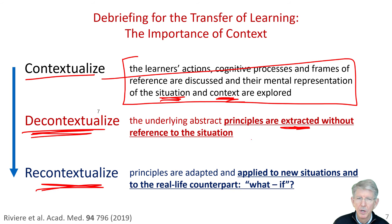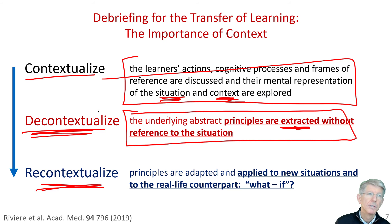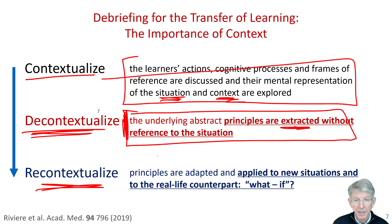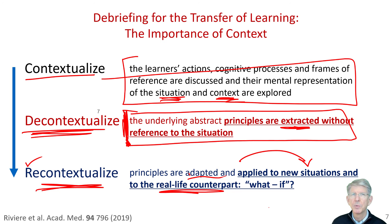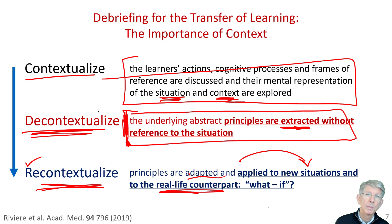The critical part is when the principles are extracted without reference to the situation. This is when you take what you've learned and strip away the surface structure — the situation, the contextual details — and go for the underlying, or what's called deep structure. Then, importantly, you have to recontextualize it. Take this deep structure and adapt it, applying it to new situations with real-life counterparts — what if this situation, what if that context — so that you allow it to move between different situations with different contexts. This way, you detach or uncouple the deep structure from context, which allows you to apply it much more effectively.